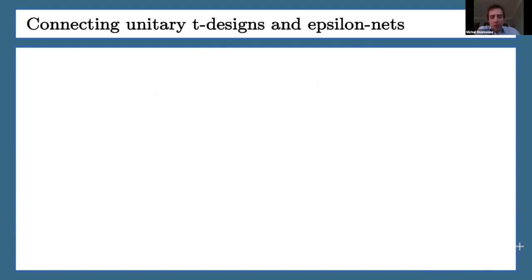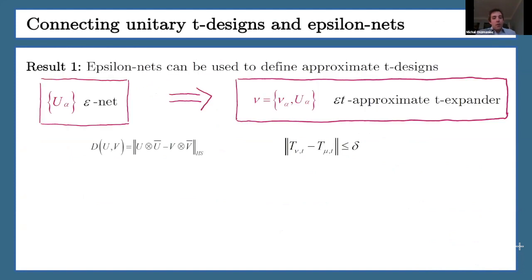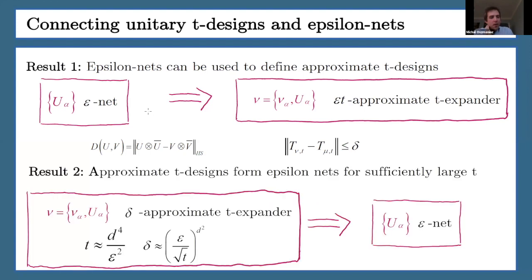Let me move to our results. The first result is that you can use epsilon nets to actually define approximate designs. Namely, if I have a collection of unitaries that form an epsilon net, then I can construct a measure supported on the set such that I will get an approximate T expander with the degree of approximation epsilon T.